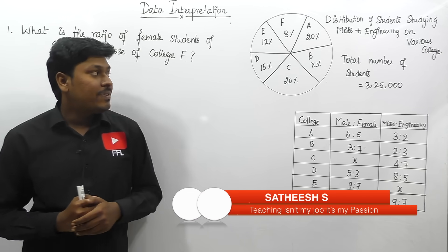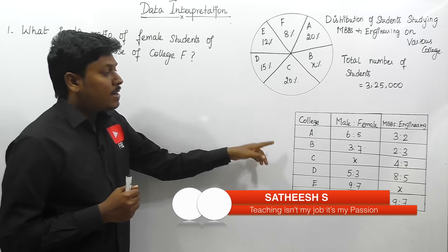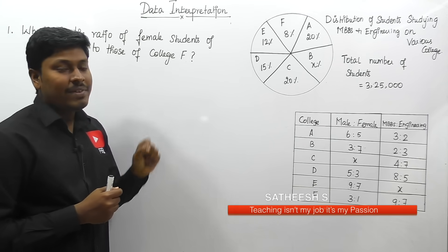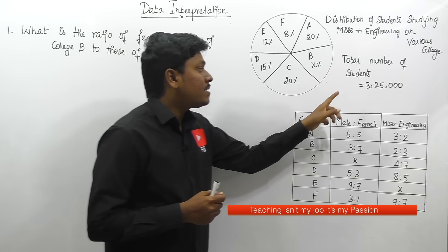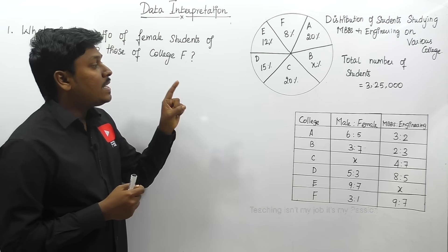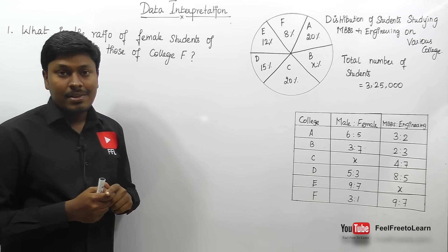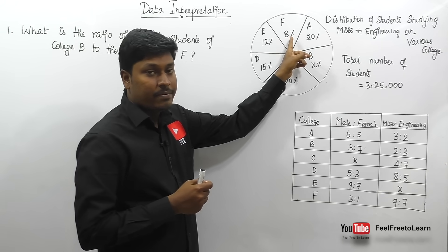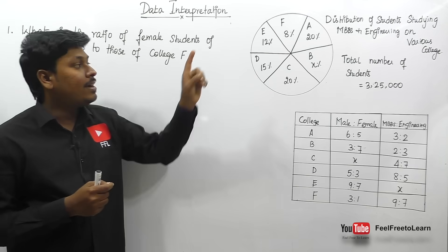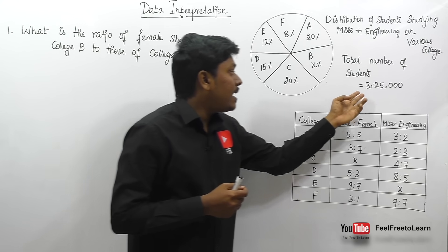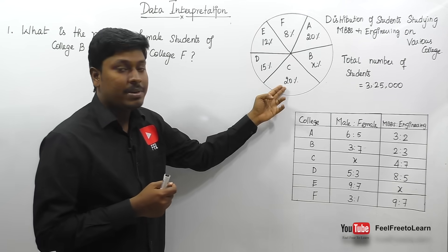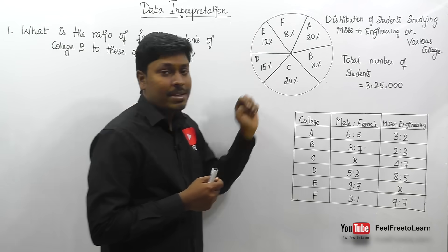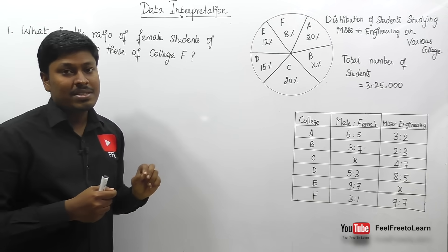Let me move on to the DI equation. Here they have given a pie chart and a table chart. The pie chart shows the distribution of students studying MBBS and Engineering across various colleges, with a total of 3,25,000 students. College C has 20%, college D is 15%, college E is 12%, but college B is given as x percentage, which we need to find.